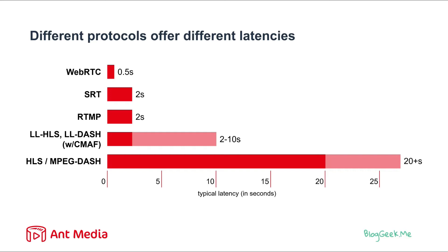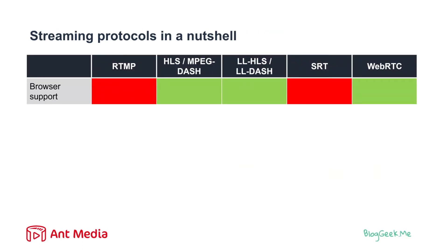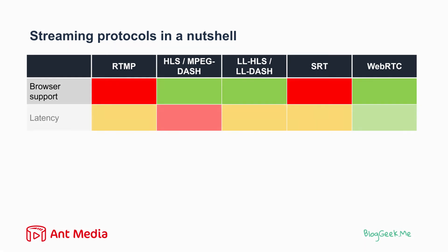Let's look at these streaming protocols and compare them by other metrics, not only latency. If we take these protocols from oldest to newest — RTMP towards WebRTC — and look at browser support, then RTMP and SRT do not offer inherent browser support; we cannot really use them inside browsers. Whereas HLS, LL-HLS, MPEG-DASH, and WebRTC are all native to browsers. For latency, WebRTC is the best and HLS and MPEG-DASH are the worst, ranging from half a second up to 20-plus seconds.